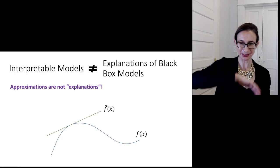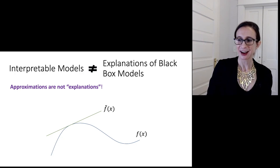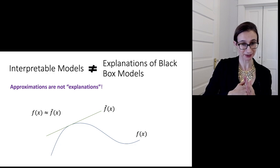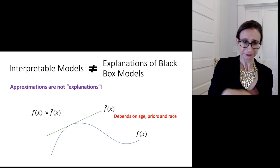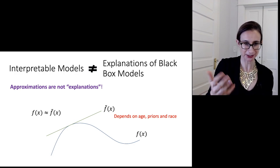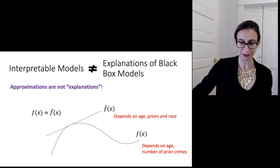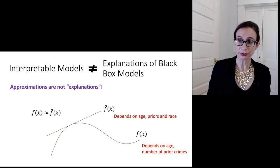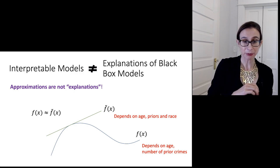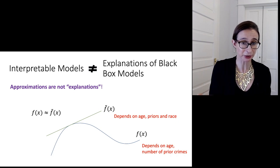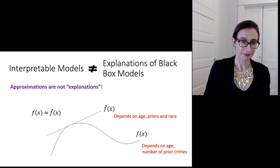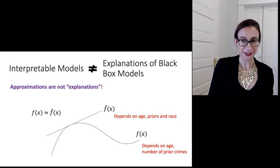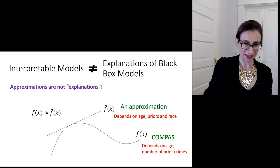Something important to know: explaining a black box is not the same thing as creating an interpretable model. If you create a model to approximate a black box, then it's an approximation, not an explanation. Because the black box and the explanation might use different variables. For instance, it's possible that an approximation depends on age, number of priors, and race, whereas the black box only depends on age and number of prior crimes. The inclusion of race in the approximation is very different. You could accidentally approximate a black box model and then conclude mistakenly that the black box depends on race. And this actually did happen — it happened with COMPASS.